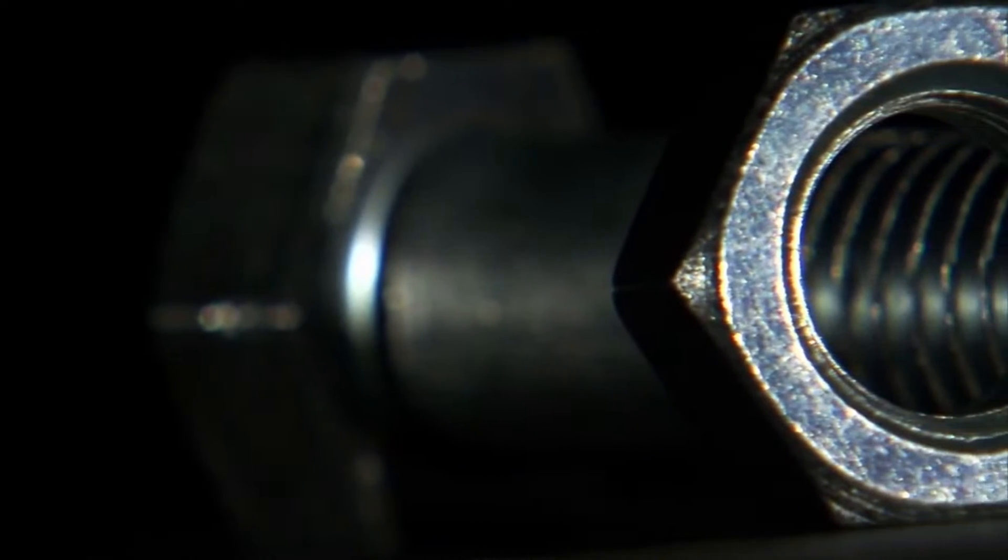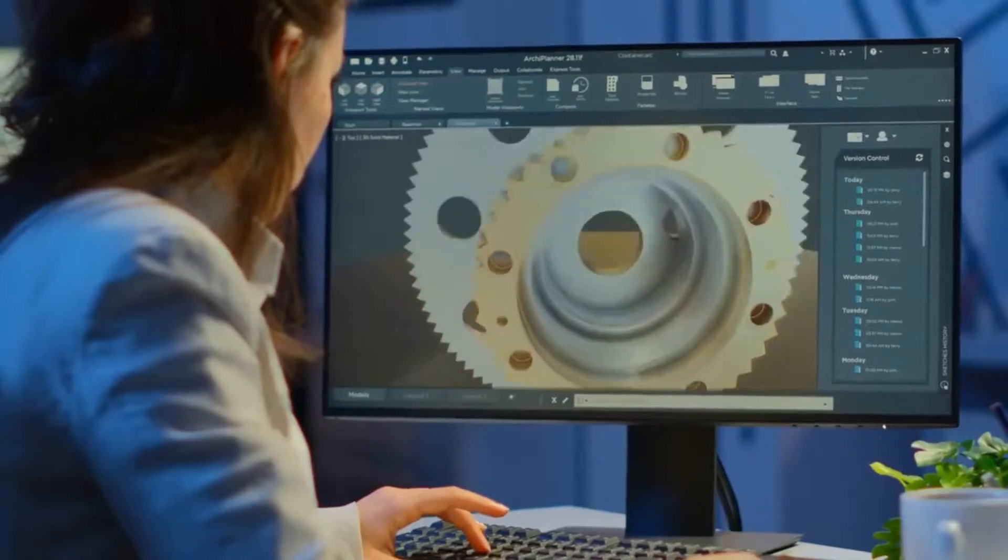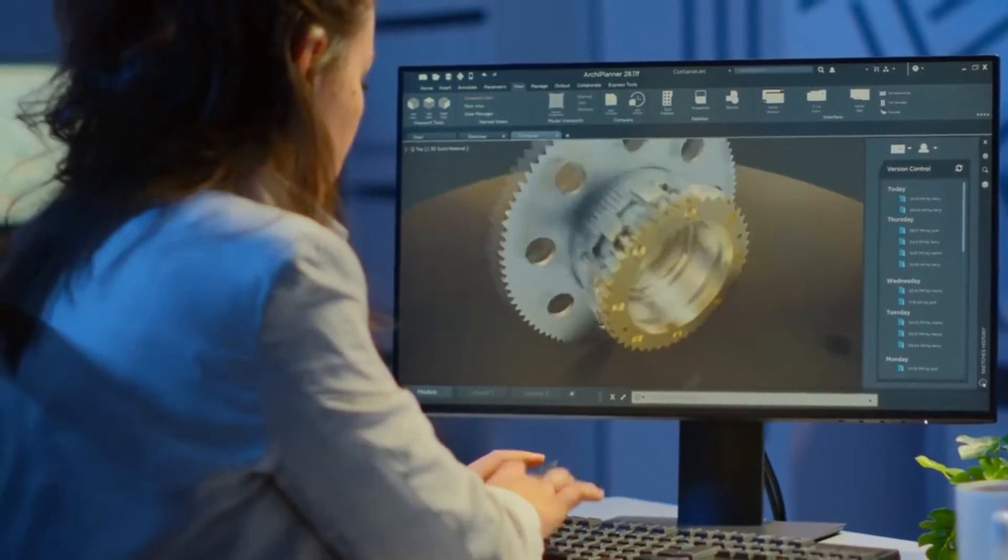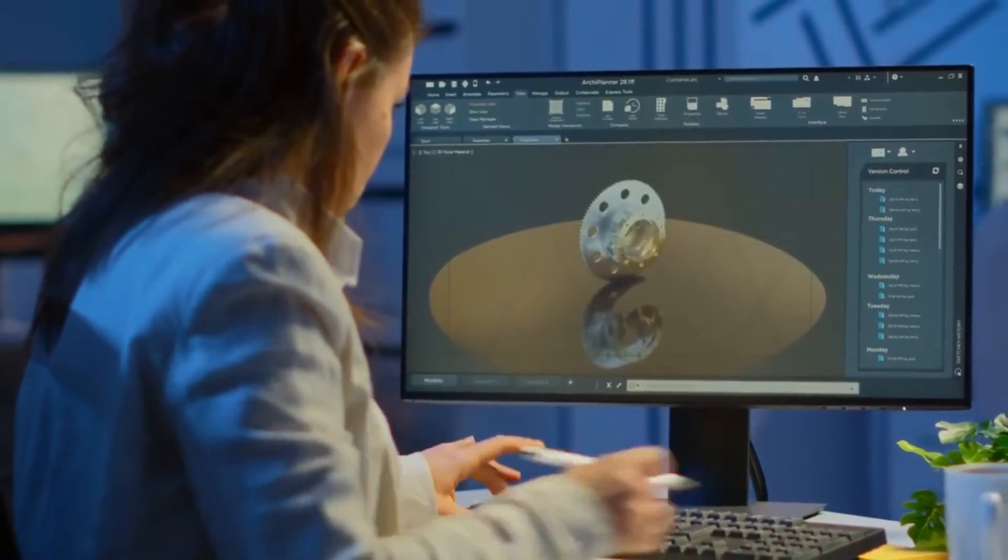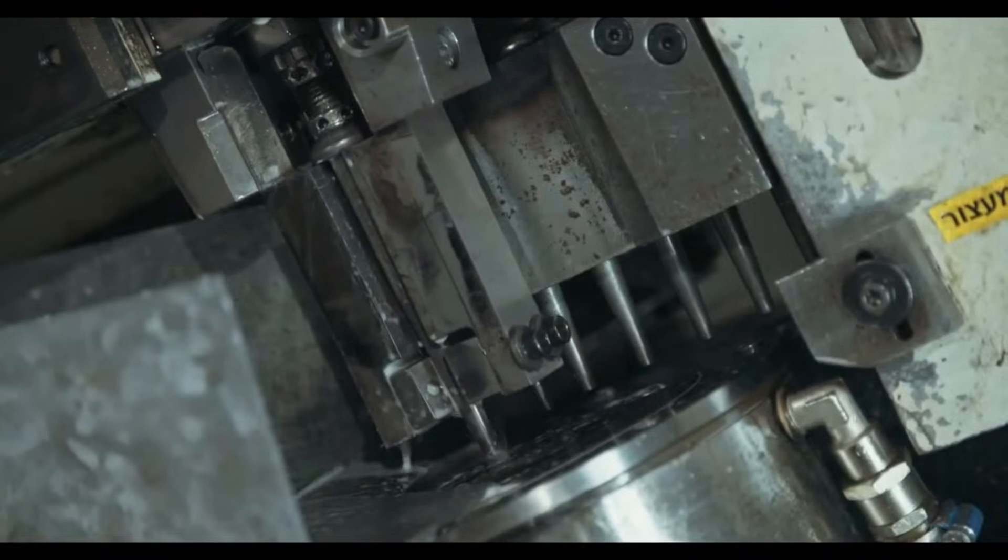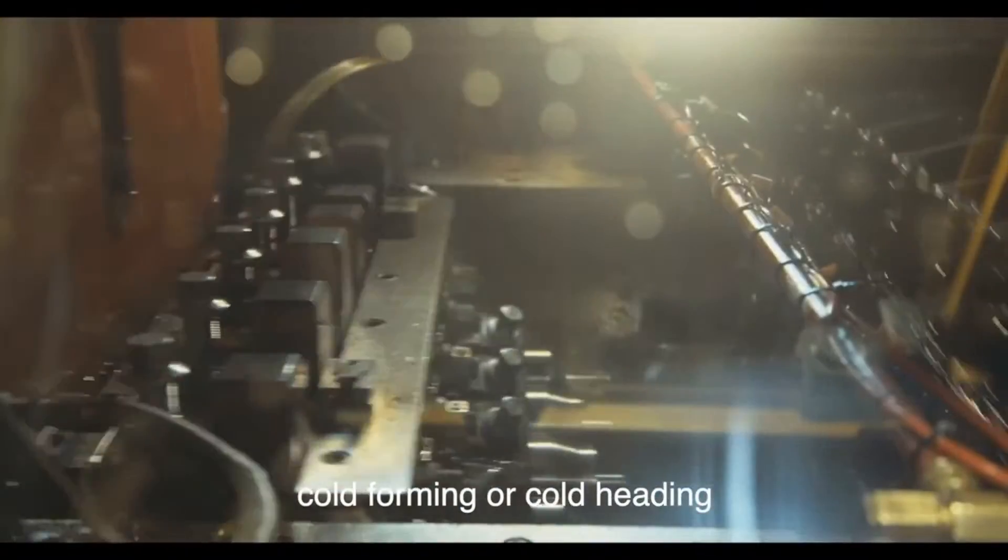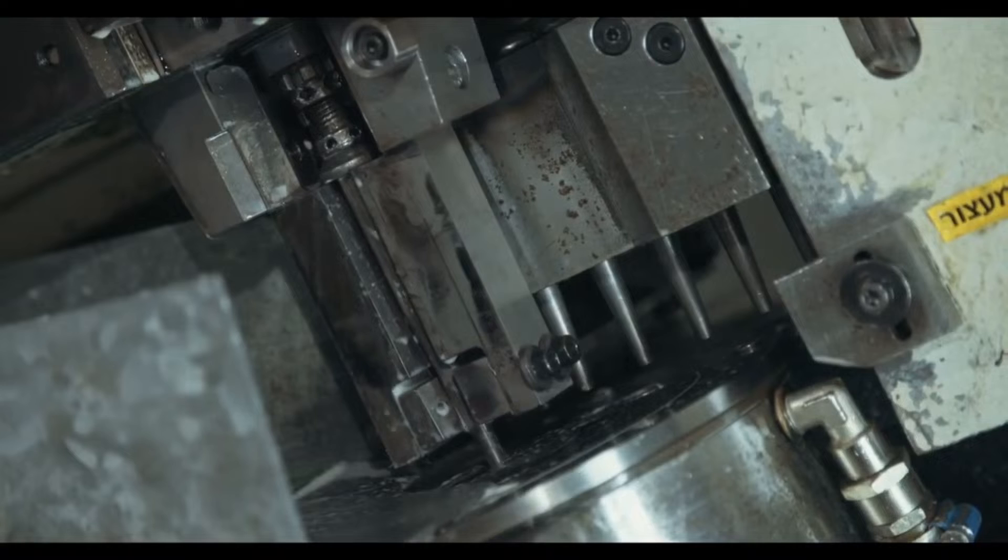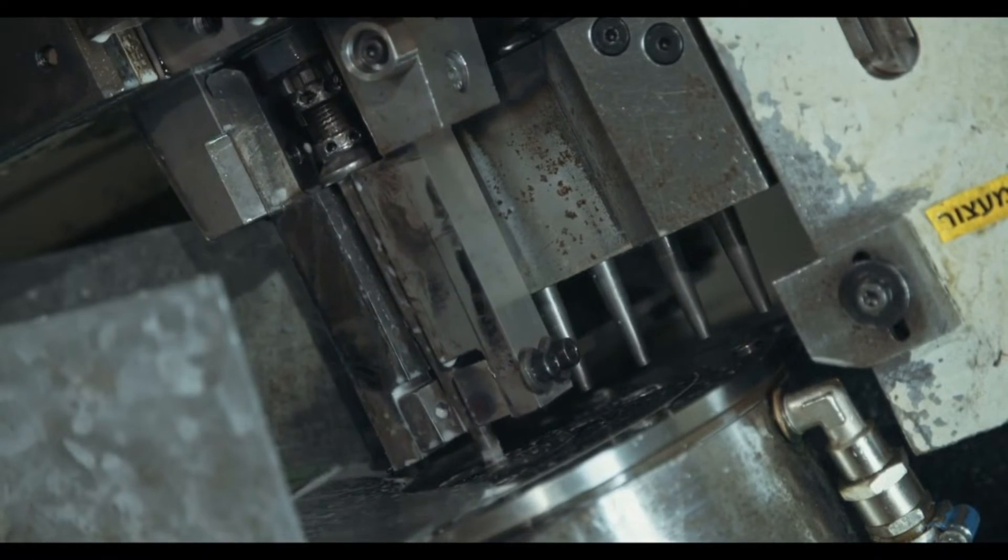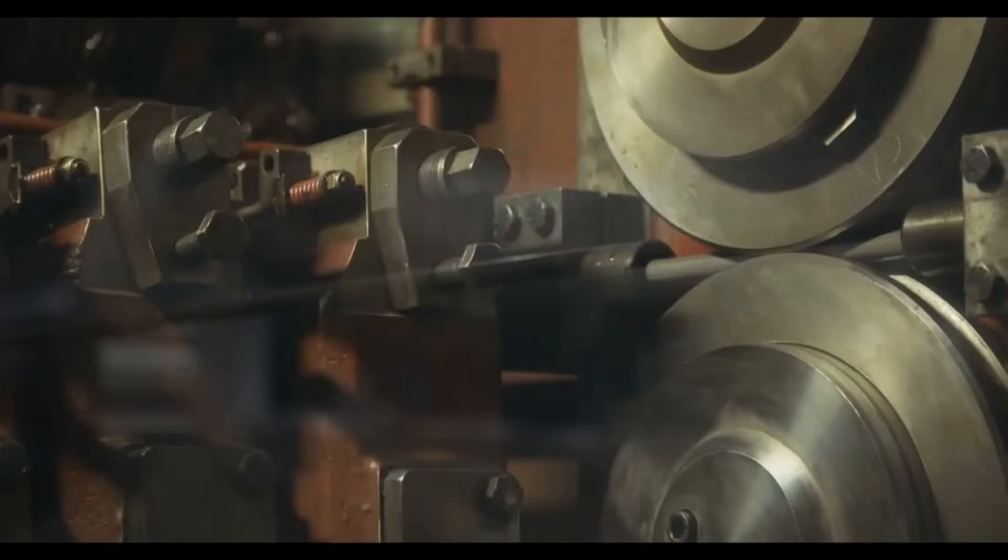In the 20th century, the advent of industrial automation and computer-aided design propelled screw manufacturing into the modern age. Today, screws are produced using a variety of cutting-edge techniques and materials. Cold-forming, or cold-heading, involves shaping metal wire into screw blanks using high-pressure dies, resulting in screws with exceptional strength and durability. Machining, utilizing computer-controlled lathes and mills, allows for the precise cutting of threads into metal rods, yielding custom screws tailored to specific applications.